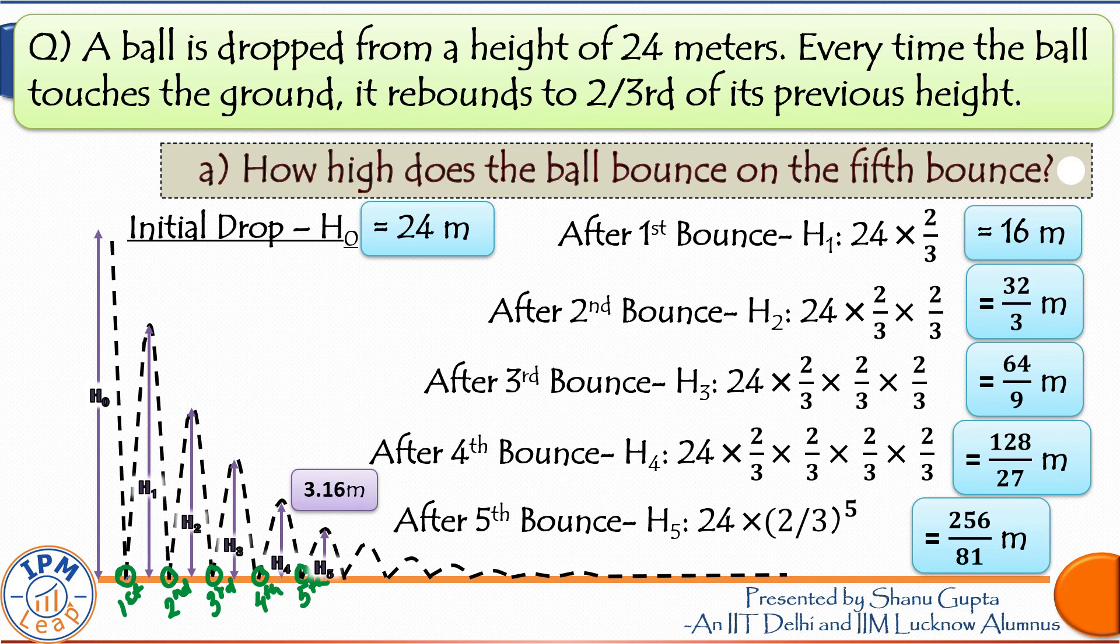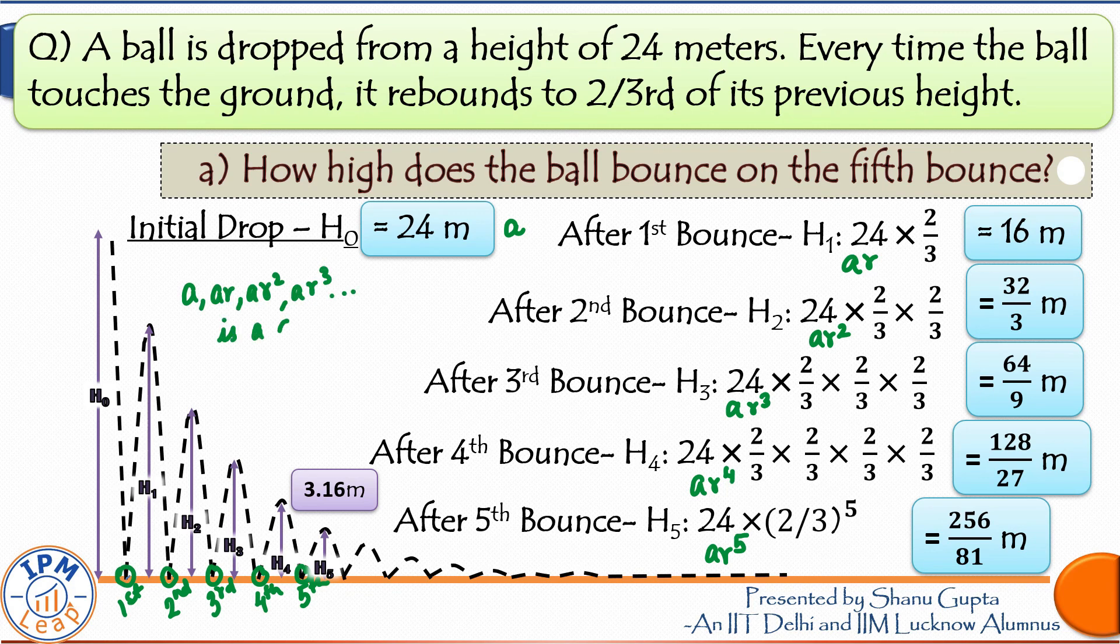An important point to note for this sequence is that if you denote the first term with the letter A, then second term becomes A times R, where R is equal to 2 upon 3 and R denotes the common ratio. Third term then is AR squared. Fourth term will be AR cubed and so on. The sixth term will be AR raised to the power of 5. So we can infer that the heights attained by the ball are following the pattern of a geometric progression.